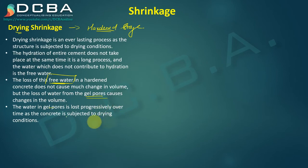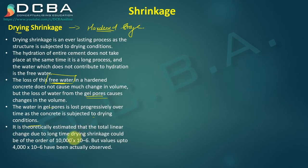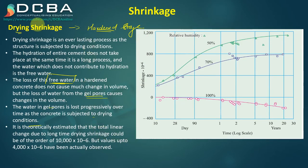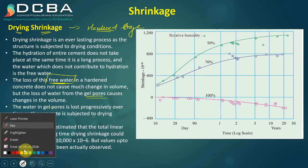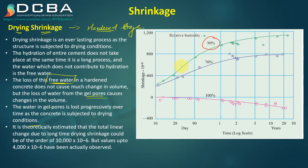The water in gel pores is lost progressively over time as concrete is subjected to drying conditions. It is theoretically estimated that total linear change due to long-term drying shrinkage could be of the order of 10,000 × 10⁻⁶, but values of 4,000 × 10⁻⁶ have actually been observed. Drying shrinkage also depends on ambient humidity — at 50% relative humidity there is more shrinkage, while at 100% relative humidity shrinkage is reduced. Over years, for lower relative humidity, shrinkage increases, while for 100% relative humidity, shrinkage decreases slowly.